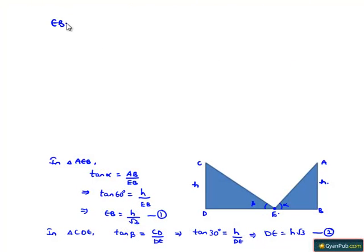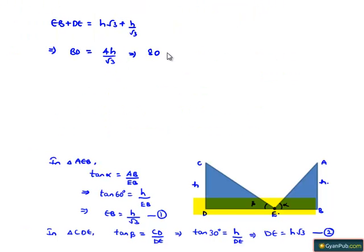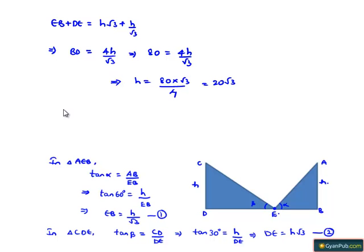By adding equations 1 and 2, we get EB plus DE equals H root 3 plus H by root 3. From the figure, EB plus DE equals BD. Taking root 3 as LCM, we get 4H by root 3. BD is given as 80 meters, so 80 equals 4H by root 3, which implies H equals 80 times root 3 by 4, that is 20 root 3. Therefore the height of the poles is 20 root 3 meters.